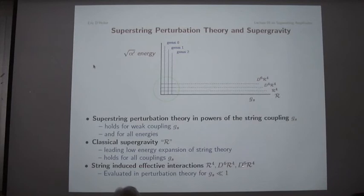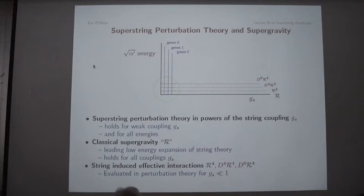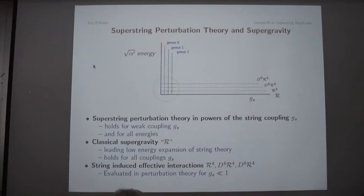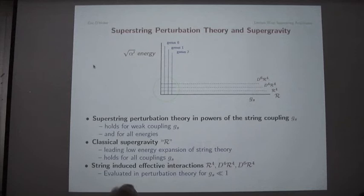This is what I call an effective interaction due to string theory — a string theory correction to supergravity, something not part of supergravity by itself. If you look at the effects of string theory on low energy propagation of supergravity particles, these interactions will be important. For every derivative squared you have, they come with an extra factor of alpha prime, so this is also an expansion in powers of alpha prime. This is the area where these two expansions meet, and one can learn from one expansion about the structure of the other.